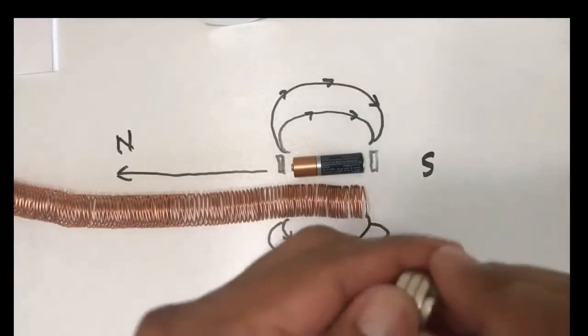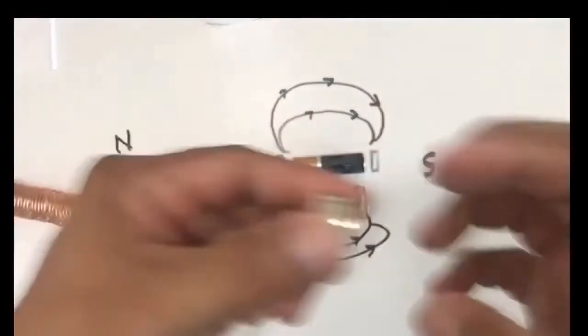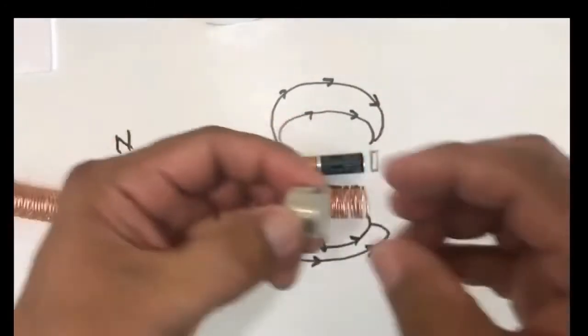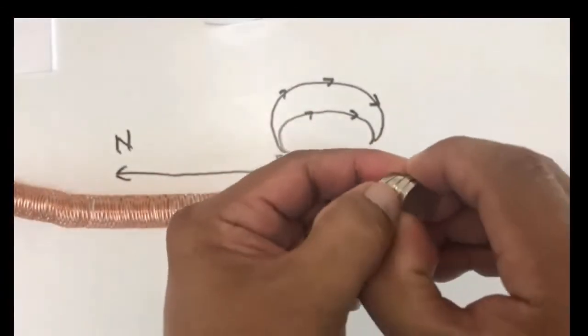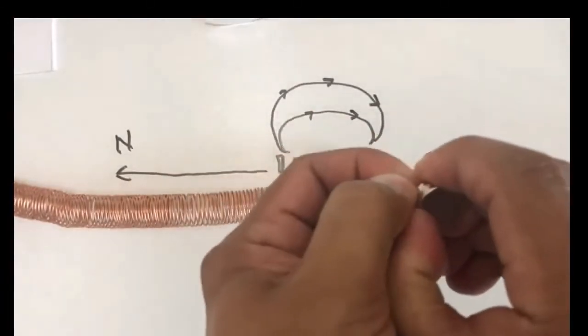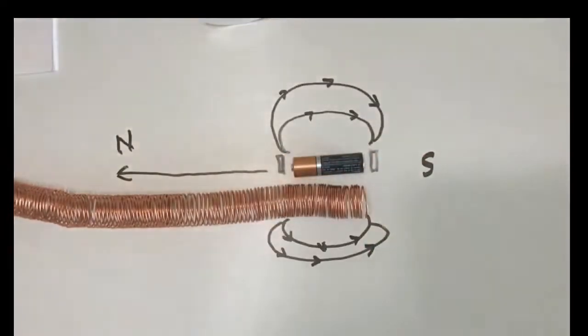This magnet is so strong that I cannot just separate them this way. I have to slide it like this so that the force is not along the magnetic force. Otherwise, I cannot separate that.